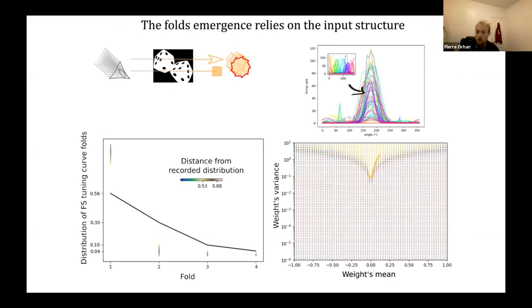On your right, you can see that the blue area is very large, meaning that the distribution of fast-spiking tuning curves develops independently of the weights mean and variance over a large domain. Now, an experiment of thought. If we take the input tuning curves and recenter them around the same preferred directions, the fold distribution completely disappears, meaning that the fold's emergence relies on the input structure.